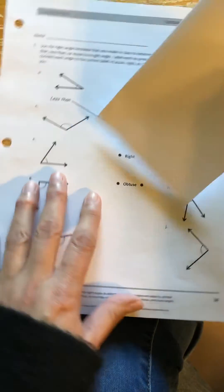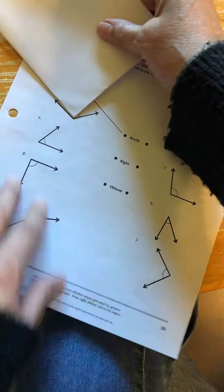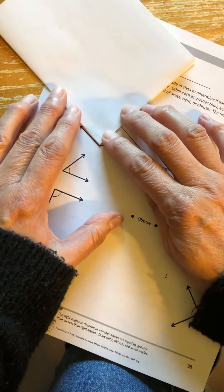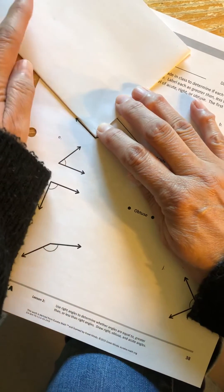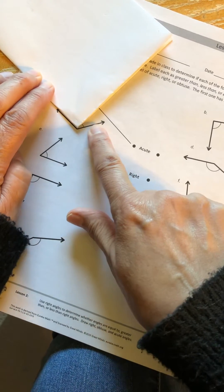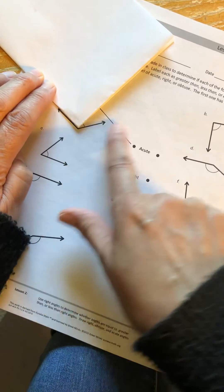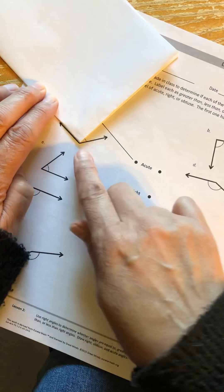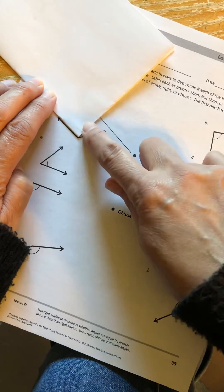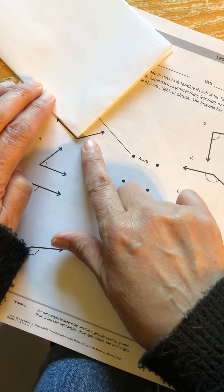Here I'm going to line up my right-angle template on one side of this angle. And as you can see on this angle, the other side is jetting away, extending away from the right-angle template. So this is an obtuse angle.